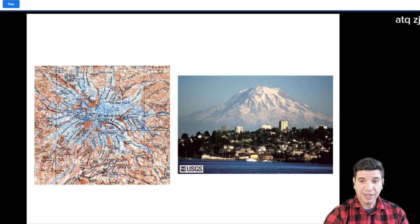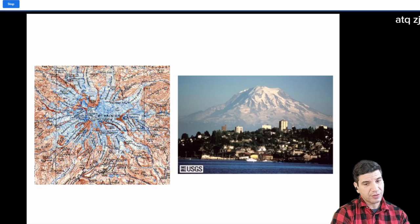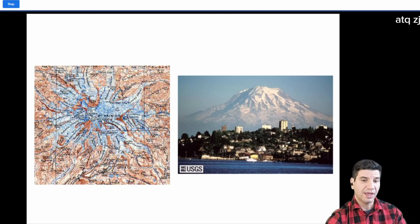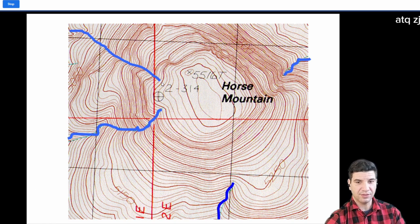So, here's Mount Rainier. Now, this obviously is not covered with rivers. It's covered with glaciers, but it's still making that radial pattern as it moves out from the center. Horse Mountain, same deal. So, the water is going down and away from the top of the mountain to the bottom.